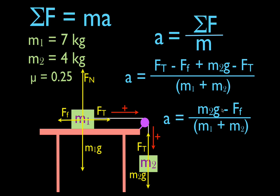Now the acceleration is simply equal to M2g minus the friction force, all divided by M1 plus M2. This makes sense: M2 pulling down is the only force causing acceleration, while friction pulls in the opposite direction trying to slow it down. So we have the weight force minus the friction force, divided by the two masses.